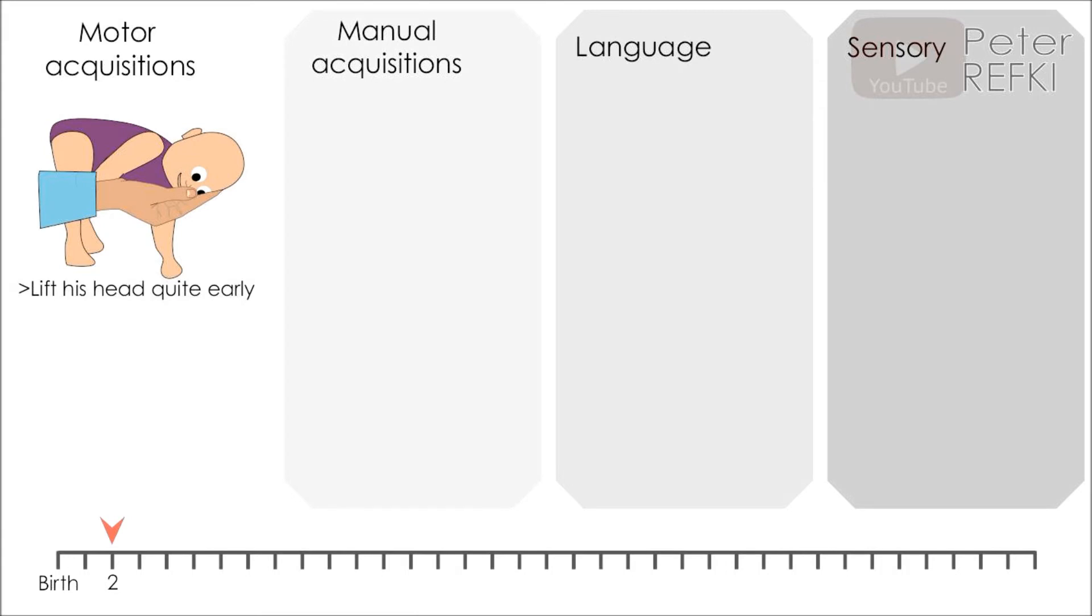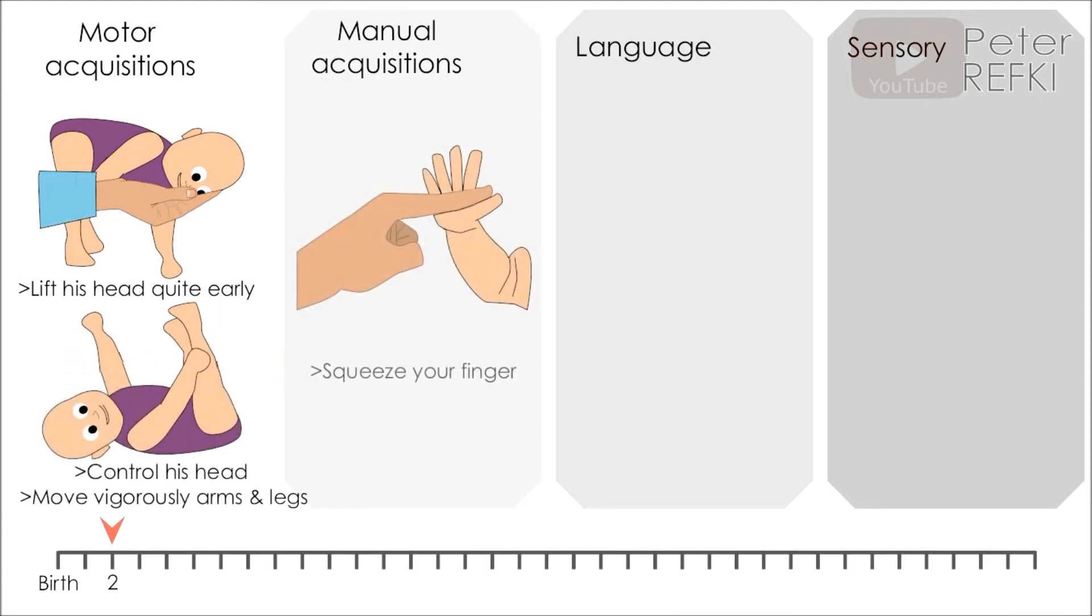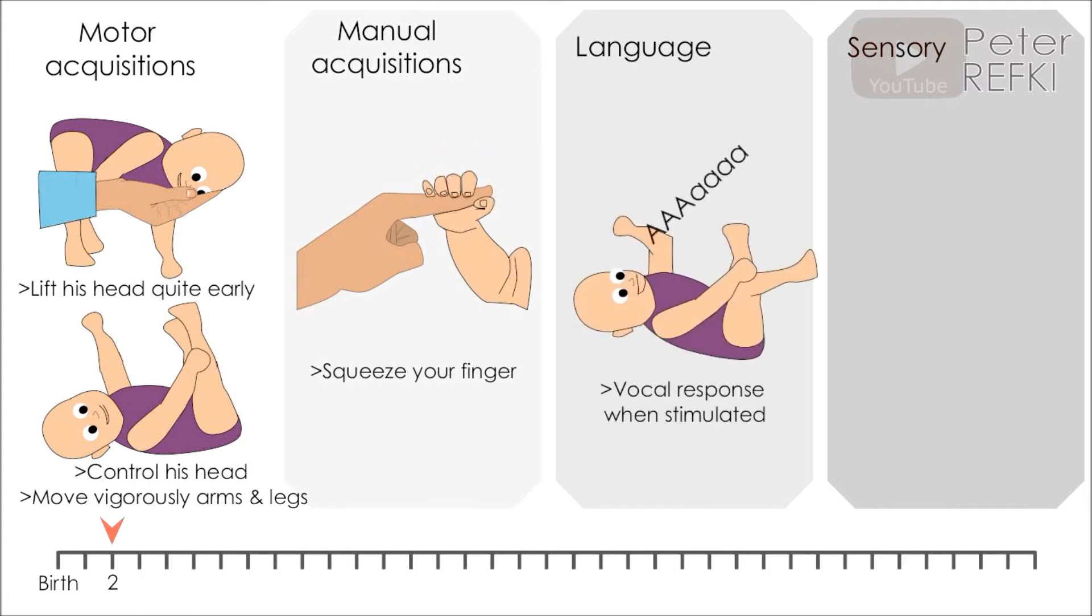At two months of age, the baby will be able to control his head in the vertical position and lift his head and shoulders when on his belly, move vigorously the arms and legs, squeeze your finger, give vocal responses when stimulated, smile at you, and follow you with his eyes.